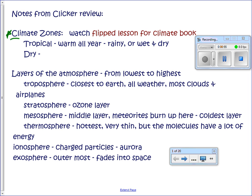Layers of the atmosphere — one of the first things we studied in weather. You do need to know all the layers from lowest to highest and something about what happens in each layer. The troposphere is where everything happens — the vast majority of water, oxygen, carbon dioxide. About 90 percent of the density of the atmosphere is in the troposphere. It's closest to Earth — all weather, almost all clouds, airplanes, and life all happen in the troposphere.